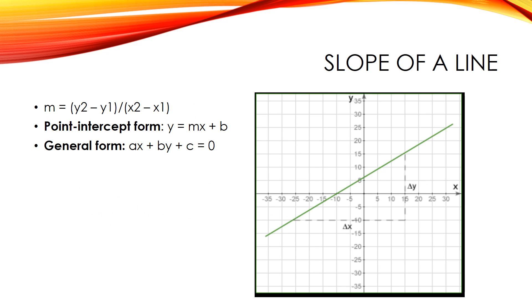Slope of a line: the slope or gradient of a line describes its steepness, incline, or grade. A higher slope value indicates a steeper incline. The slope is defined as the ratio of the rise divided by the run between two points on a line — in other words, the ratio of the altitude change to the horizontal distance between any two points on the line. Given two points (x1, y1) and (x2, y2) on a line, the slope M is: M = (y2 − y1) / (x2 − x1).